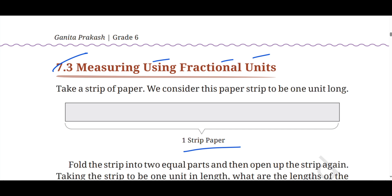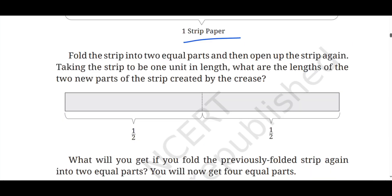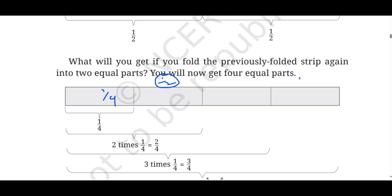Take a full paper strip. When you fold the paper strip from the middle, we get two halves — this is one half and this is one half. When you again fold one half from the middle, we get one more half from it. So we got four parts, each being 1/4. This is 1/4, this is 1/4, and this is 1/4.